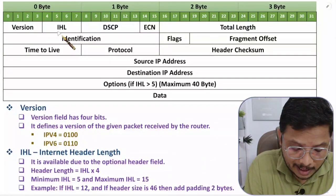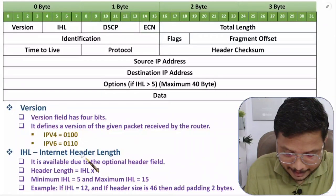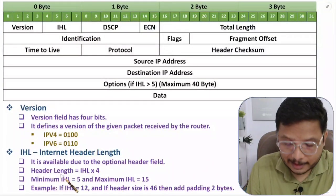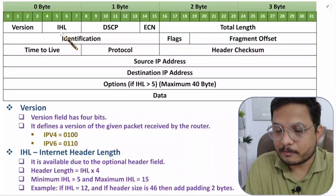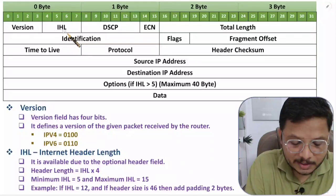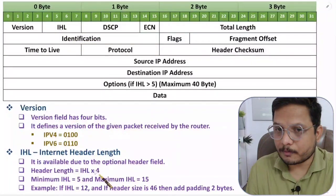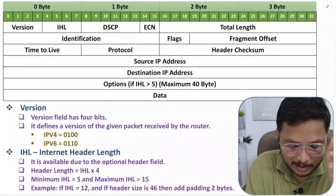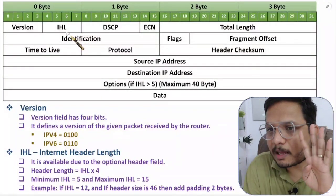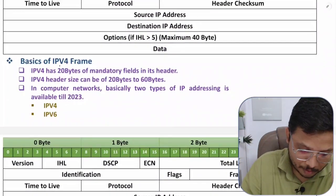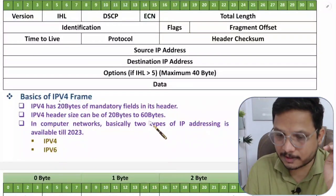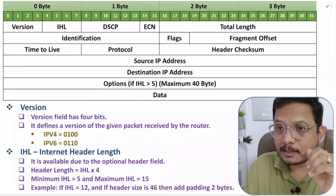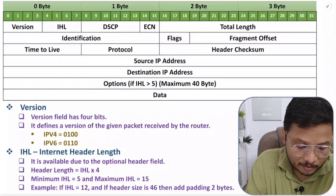The next field is IHL — Internet Header Length — also having a size of 4 bits. The header length is calculated by multiplying the IHL value by 4. The IHL bit values can go up to a maximum of 15 (all four bits being 1s), so 15 multiplied by 4 equals 60. That's why the maximum header size is 60 bytes, which I mentioned earlier.